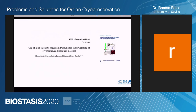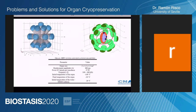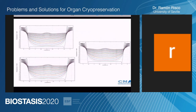This exploration of ultrasounds has a second application: warming of organs. This paper is about to be published in Ultrasonics. Here you have a simulation of a kidney-sized sample warming from minus 140 to minus 20 degrees in a very uniform and quick way. You can see the warming is very uniform across the X, Y, and Z axes.